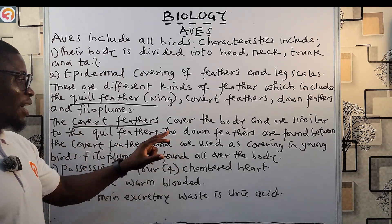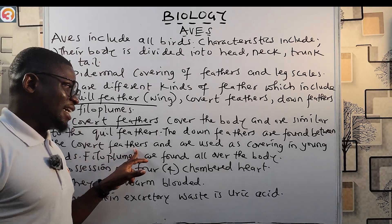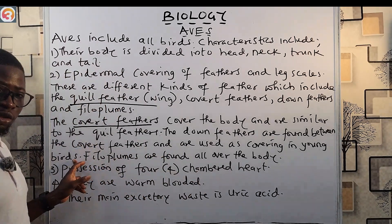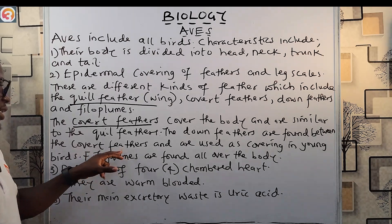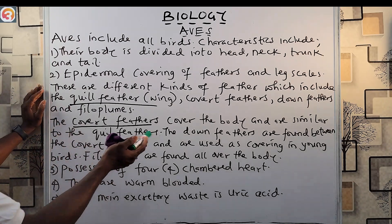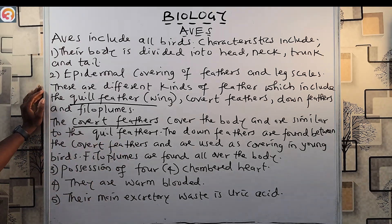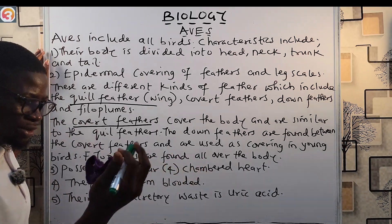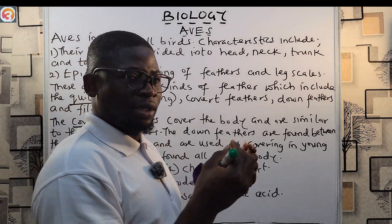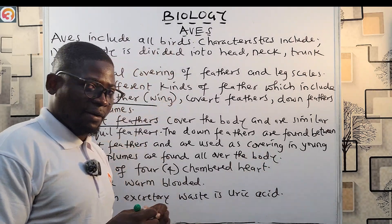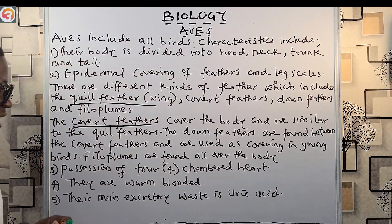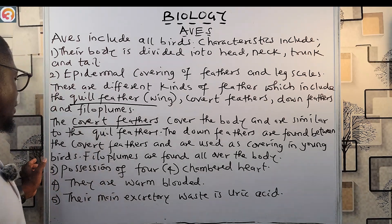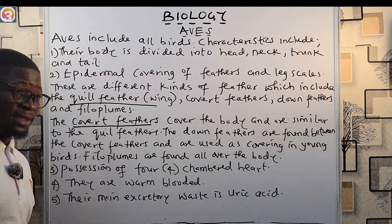The down feathers are found between the covert feathers and are used as covering in young birds — the young ones use down feathers to cover themselves. The filoplumes are very small feathers found all over the body of the bird.